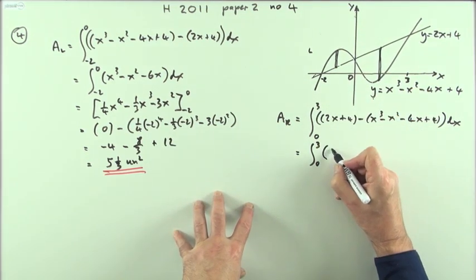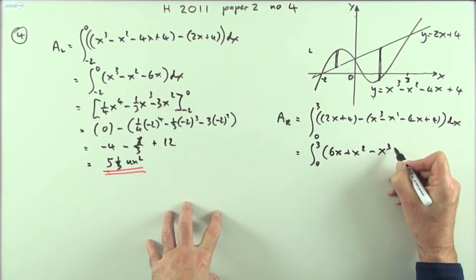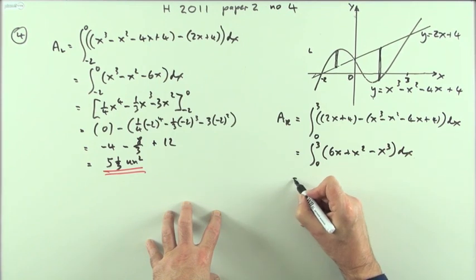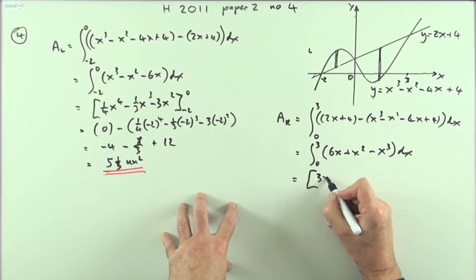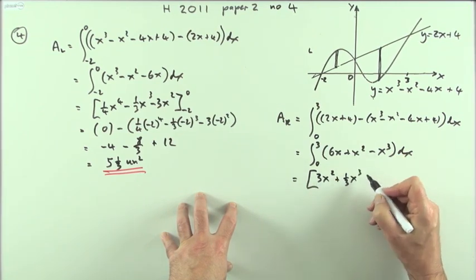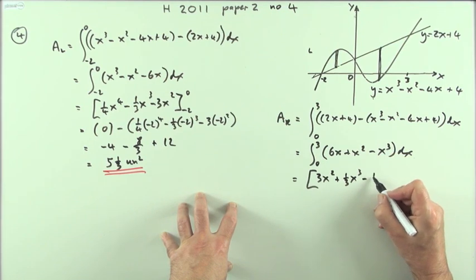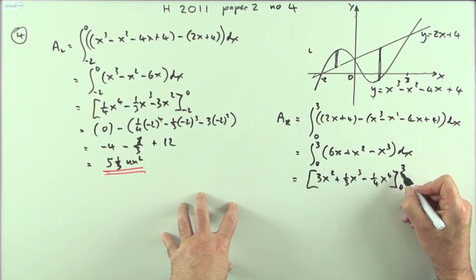So this one must be 6x + x² - x³ dx, which will give the same thing. That'll be 3x² divided by 2, plus x³/3, minus x⁴/4, from zero to three.